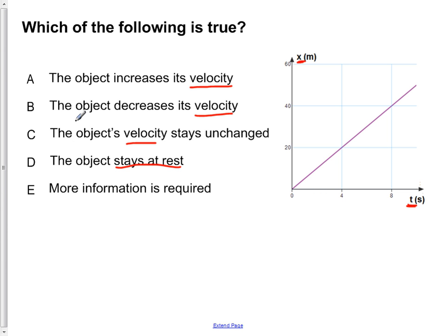E won't be an answer unless all four of these other ones are wrong. So how do we determine if these are right or wrong, any of these choices? So we have to somehow determine the velocity from this graph.